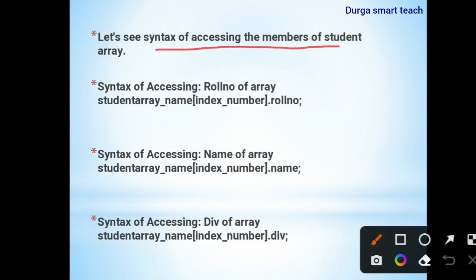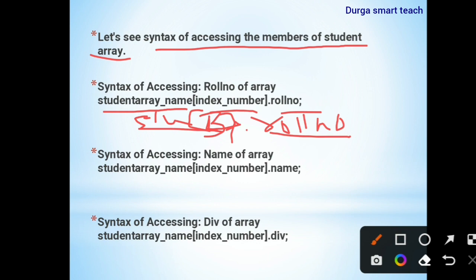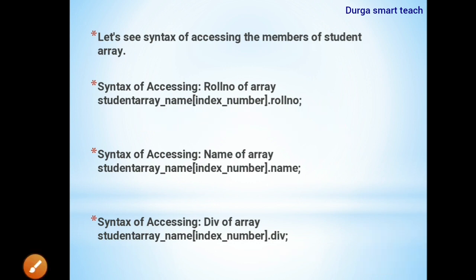For example, to access the name of the second student, you write s[2].name — this accesses the name stored in the s[2] array element. If you want to access the role number, you write s[2].roleNumber. Similarly for division, you write s[2].div. This is the syntax to access individual members of an array of union.